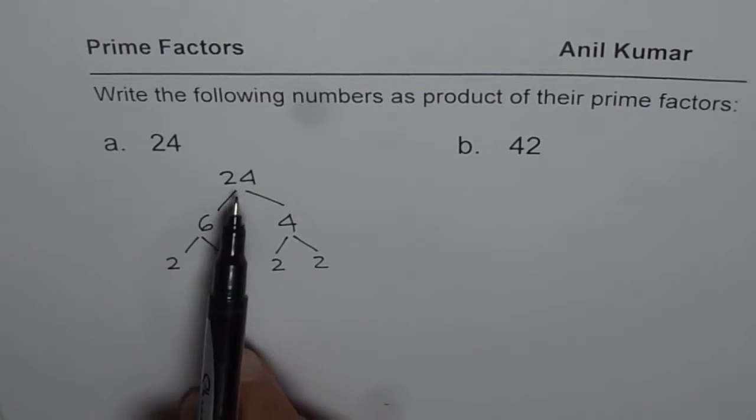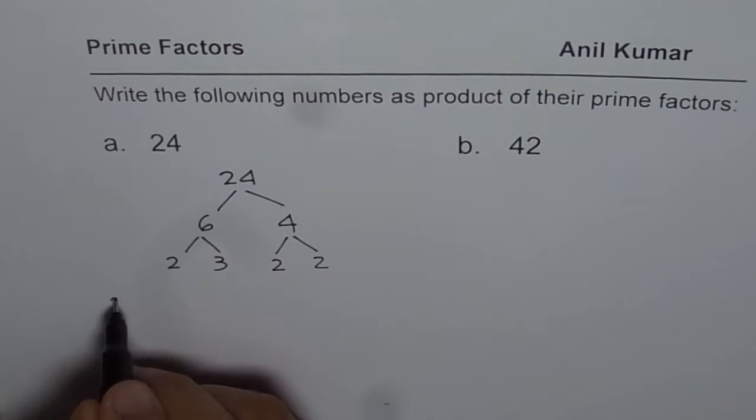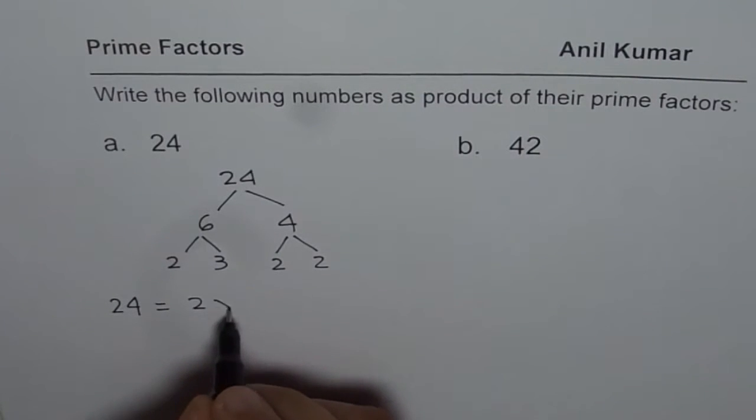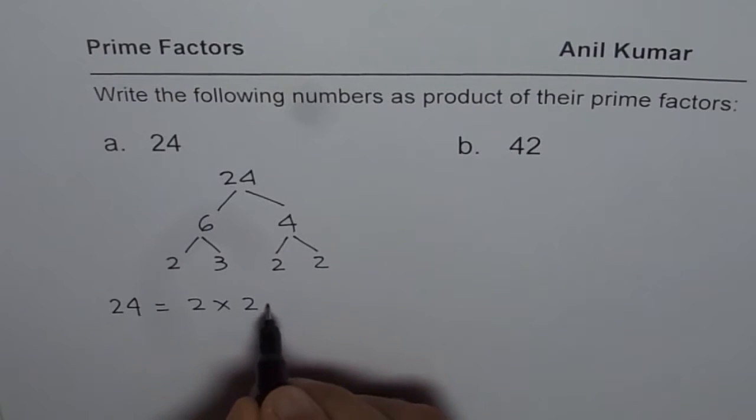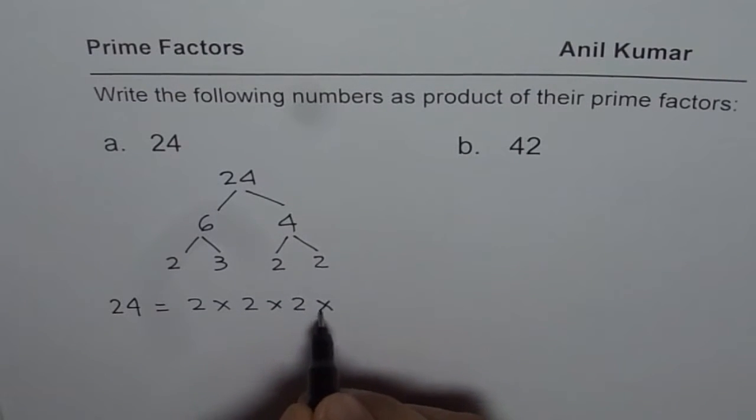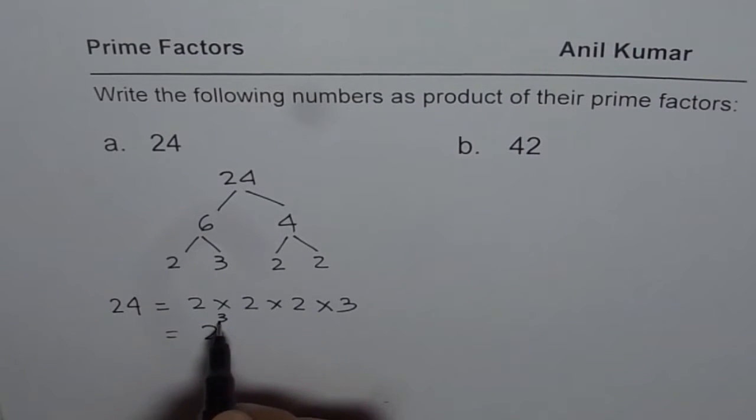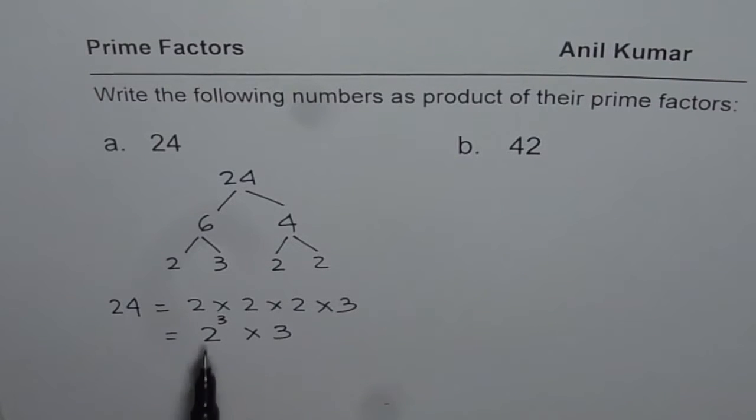And now we can write 24 as product of these prime factors. So 24 is equal to 2 times—let us write them in order—2 times 2 times 2 times 3. Now since we have 2 times 2 times 2, it could be written in exponent form also: 2 cubed times 3. So if you have not learned the exponent form, the first answer is also good enough.